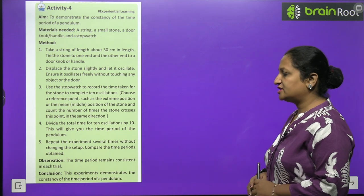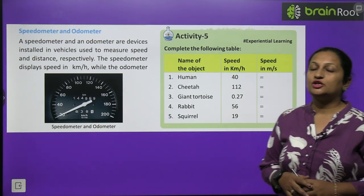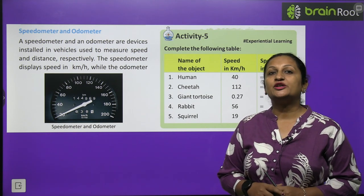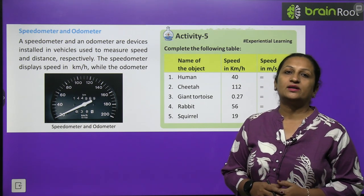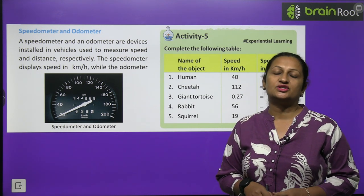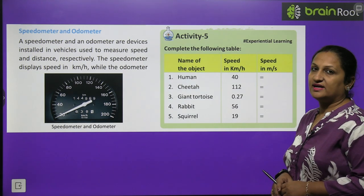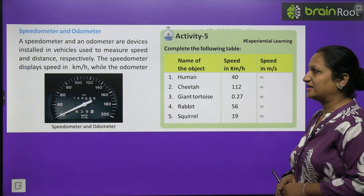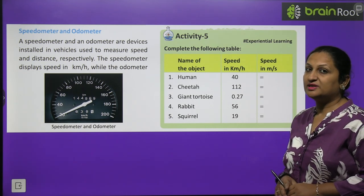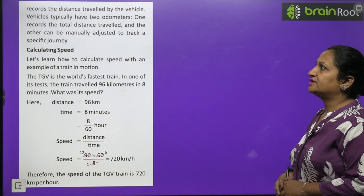Both these devices are fitted in vehicles. The speedometer is a device used to measure the speed of the vehicle — it tells how fast the vehicle is moving. The odometer is a device used to measure the distance traveled. A speedometer and odometer are devices installed in vehicles, used to measure speed and distance respectively. The speedometer displays speed in kilometers per hour.